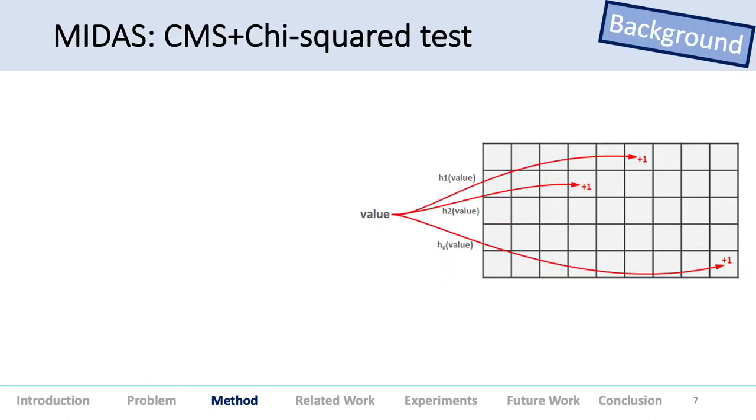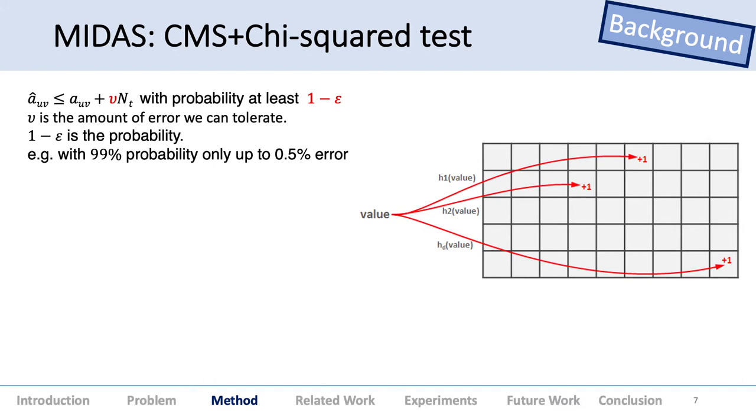Now the algorithm. This is brief background about MIDAS, which M-STREAM was built on top of. MIDAS uses two things: a Count-Min sketch and a chi-square test. The Count-Min sketch is a streaming data structure with hash functions. For each hash function, you hash the value to a particular bucket. The Count-Min sketch has this wonderful theoretical guarantee where, with probability at least 1 minus epsilon, we can only tolerate up to mu amount of error. For example, with 99% probability, we want the value correct within 0.5% error.